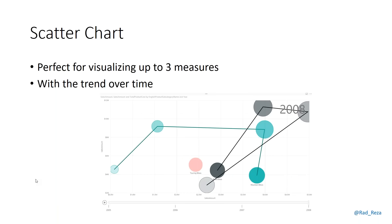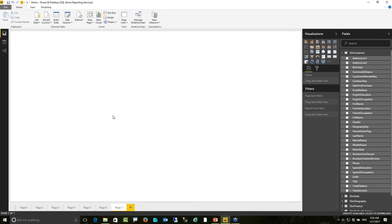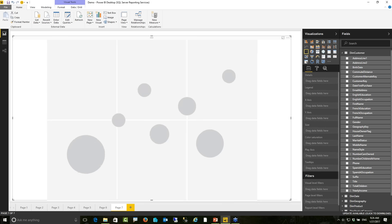The scatter chart is really helpful and special in Power BI. It's perfect for visualising three different measures together in one chart. You can also see how these are trending over time — different years, different months — whether they're going upward or downward and how they compare. Power BI's scatter chart has a specific play axis, which is really powerful for analysing something over time.